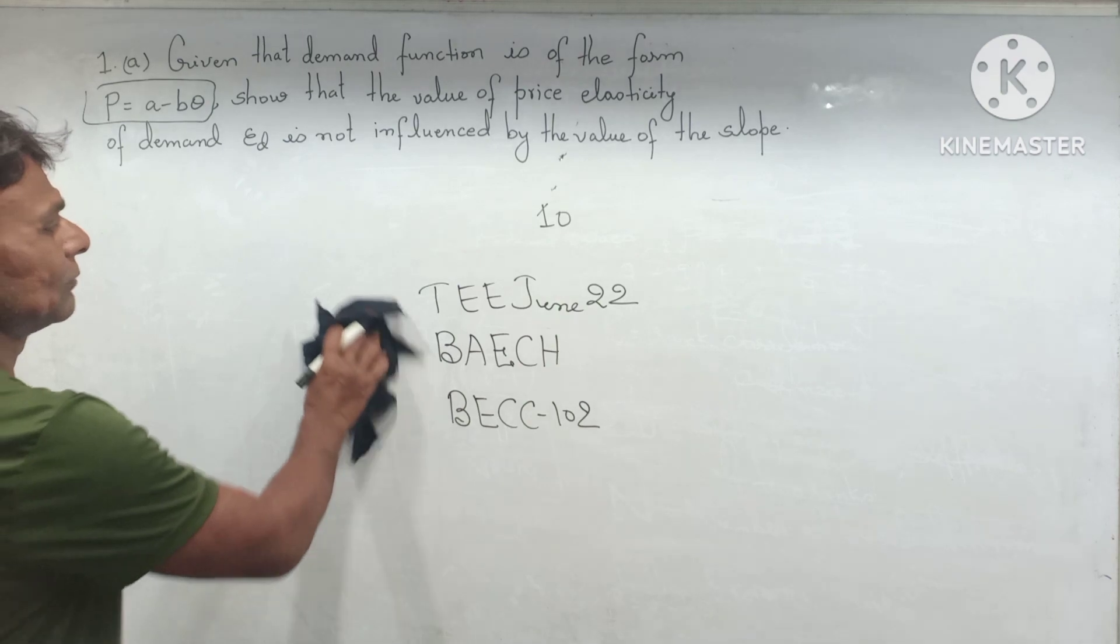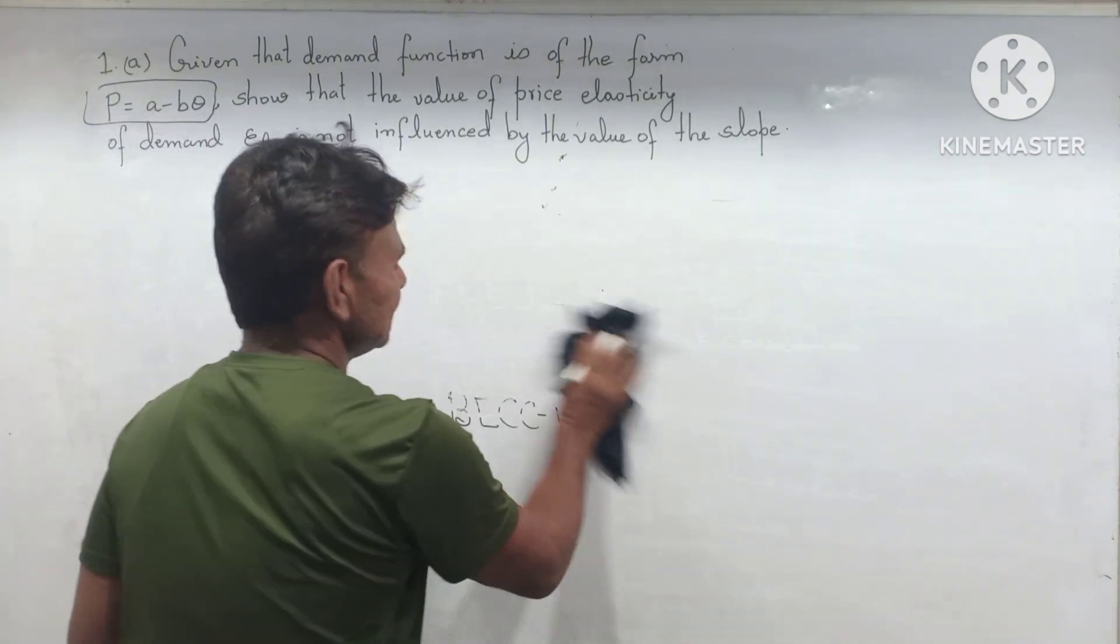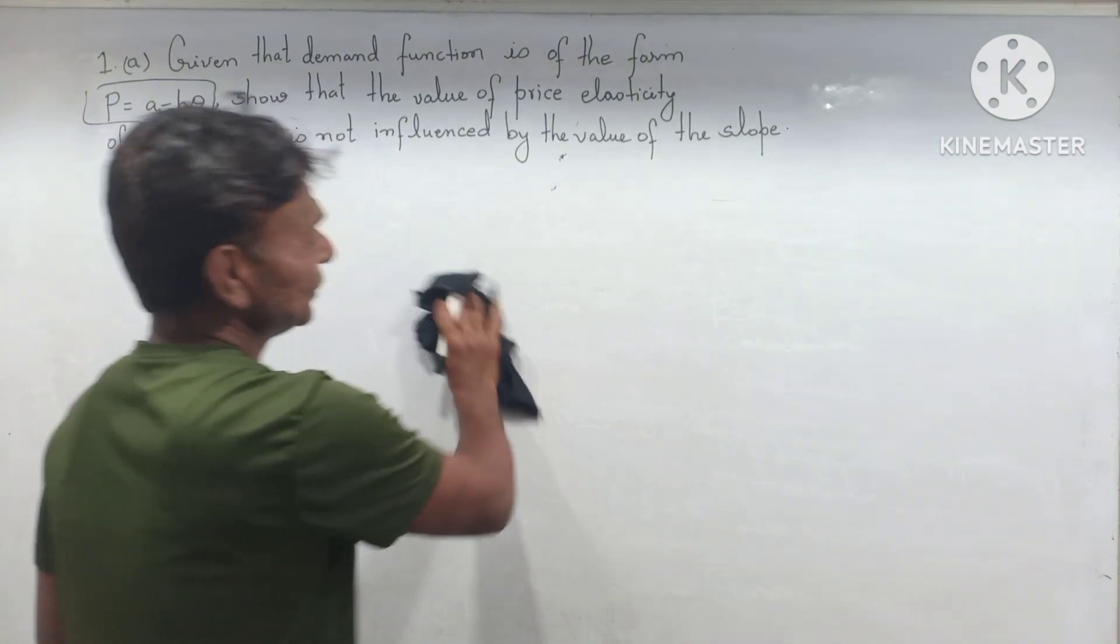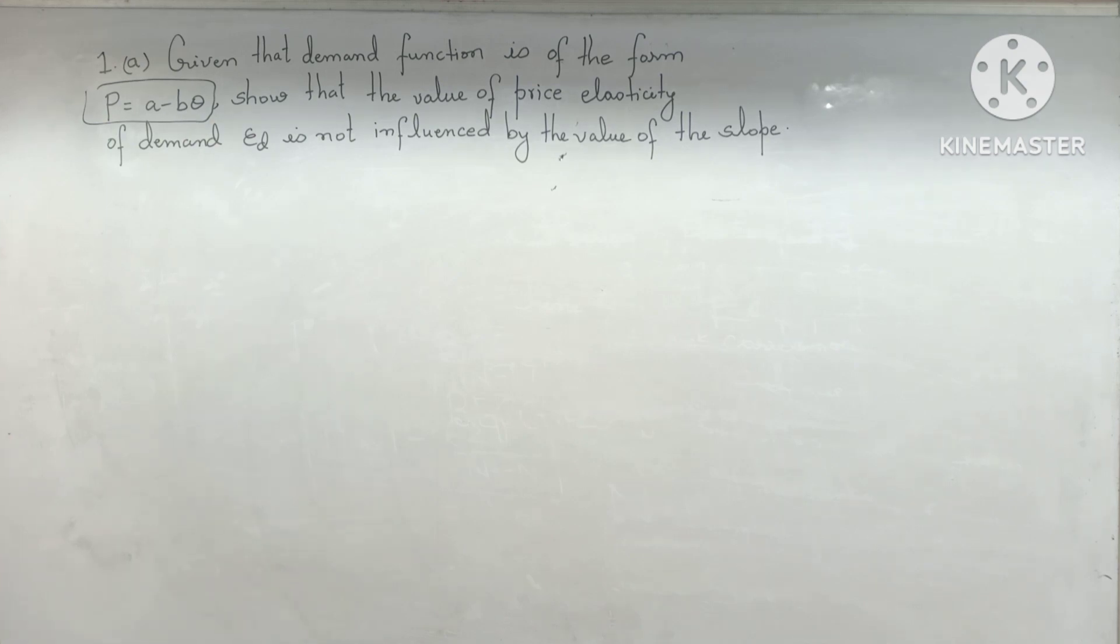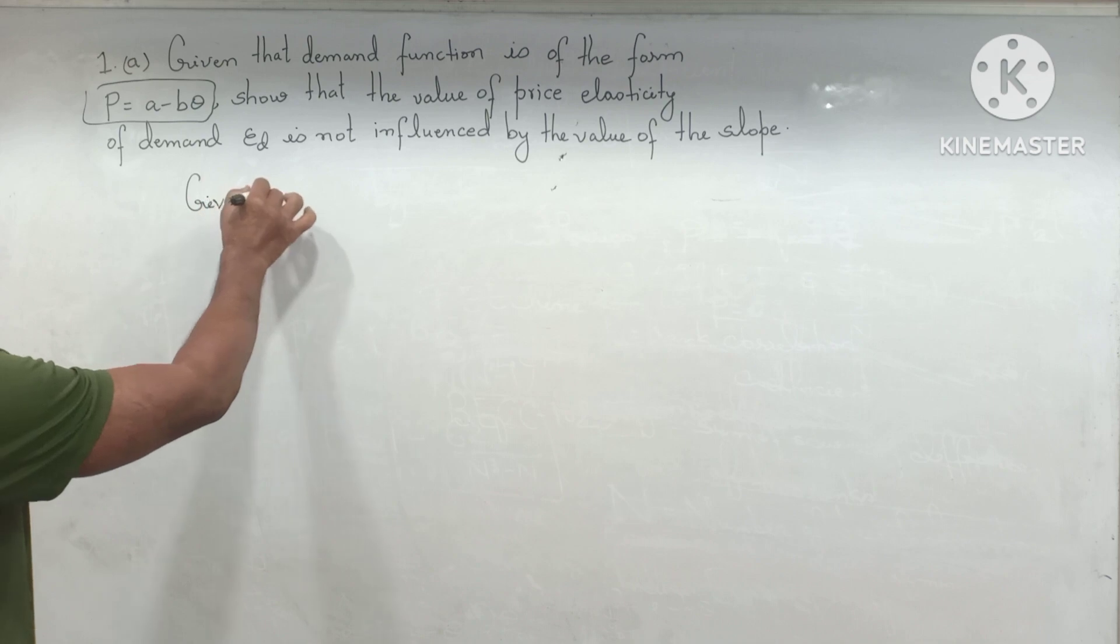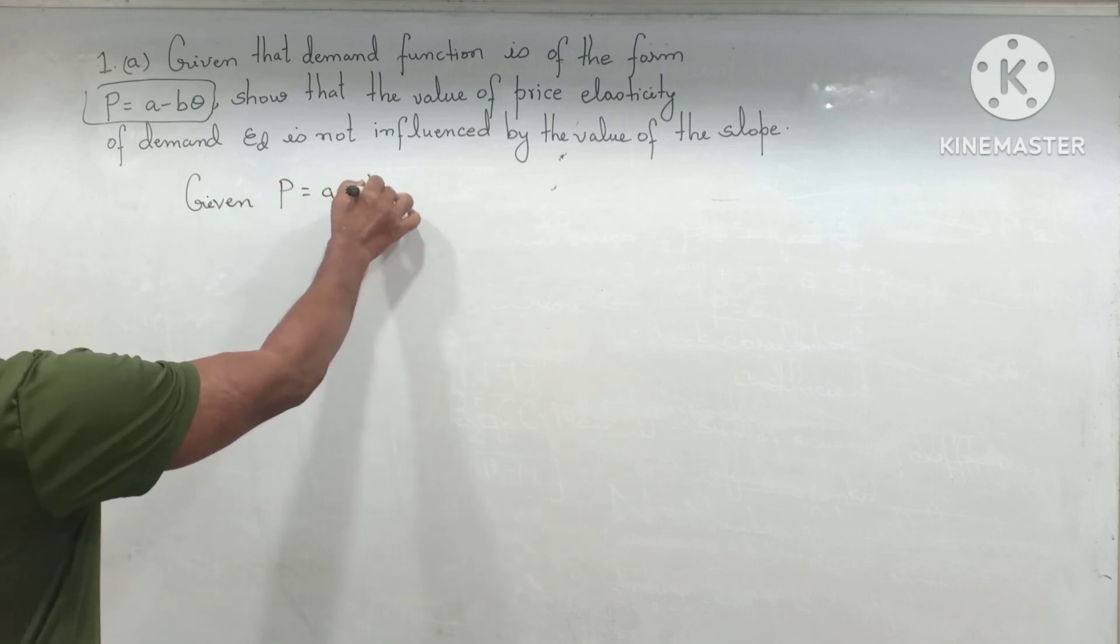Let us start the solution for this problem. It is very simple, you only need to watch the video till the end. First, given demand function P = A - BQ.